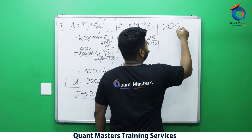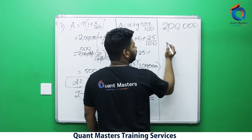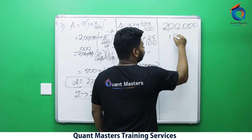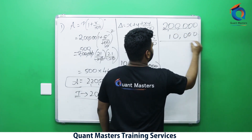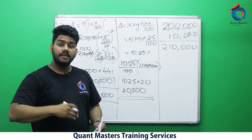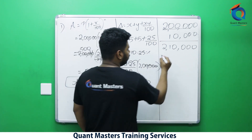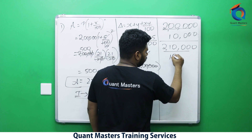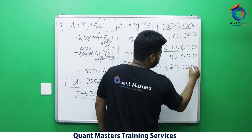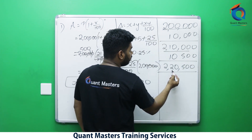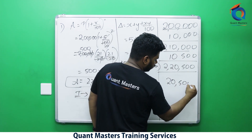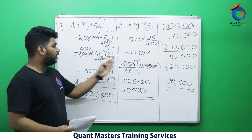Method three: principal is 2 lakh at 5% interest. 10% of 2 lakh is 20,000, so 5% is 10,000. At the end of year one: 2,10,000. For year two: 10% of 2,10,000 is 21,000, so 5% is 10,500. Total amount is 2,20,500, giving compound interest of 20,500 rupees.